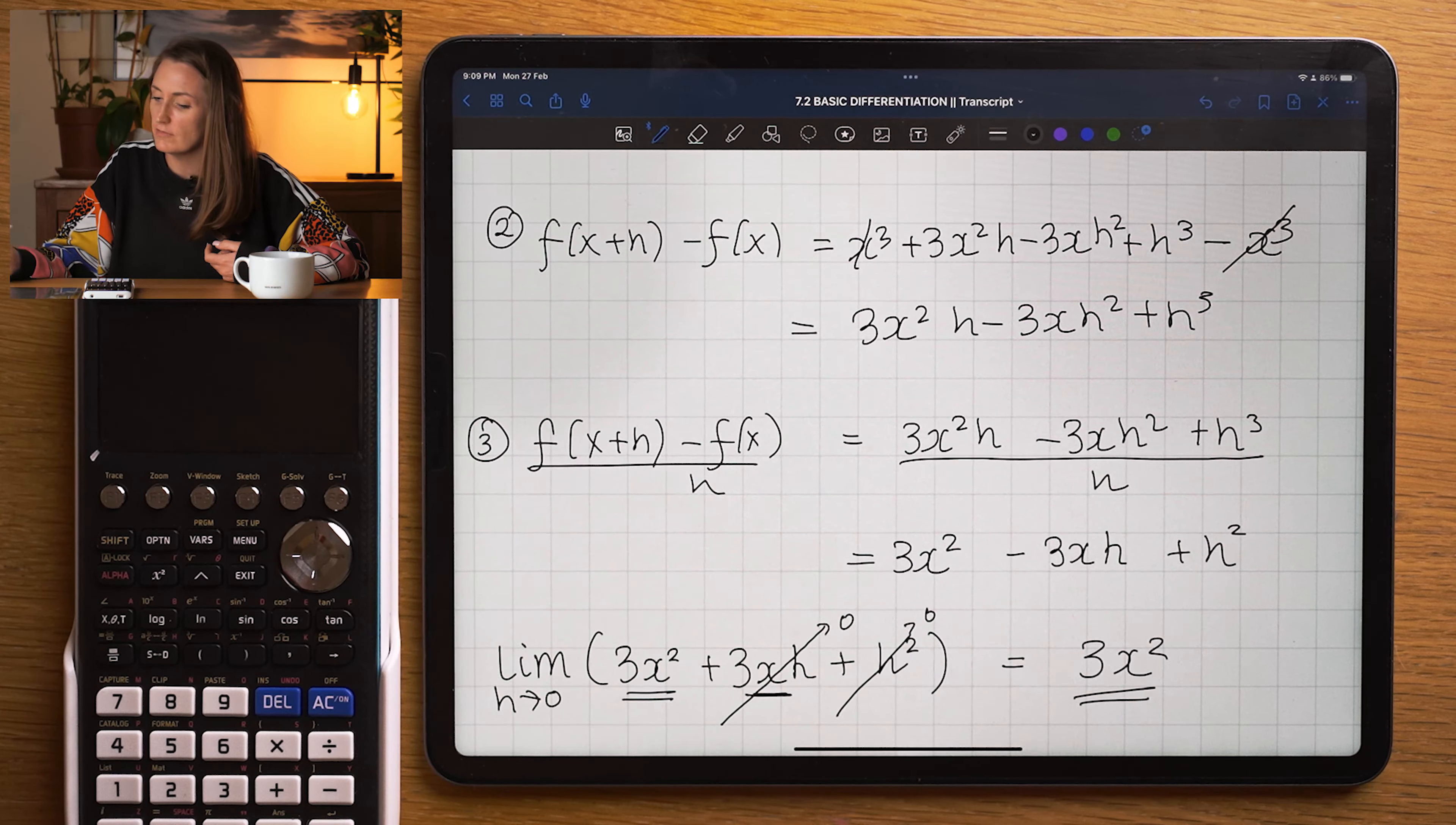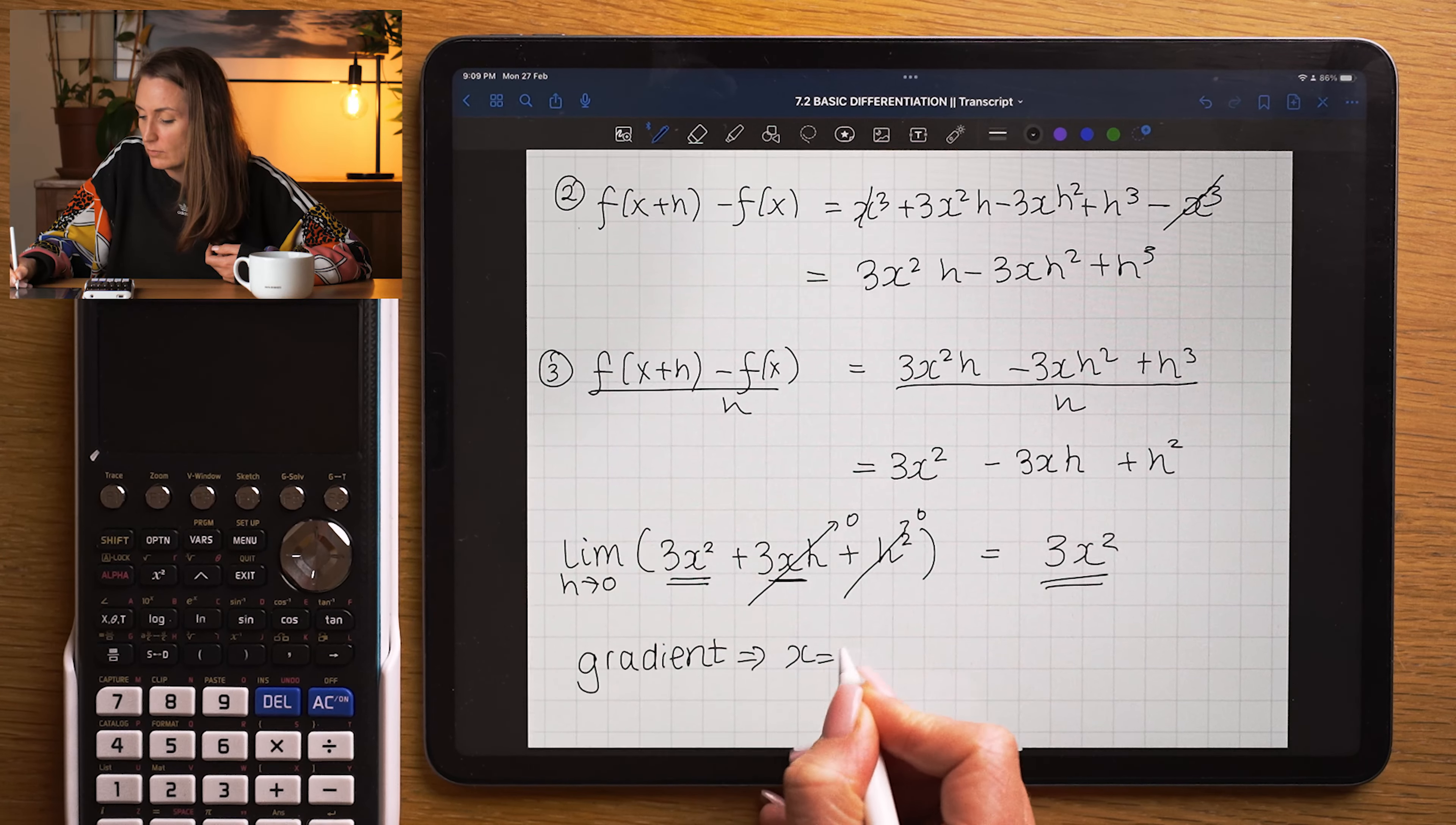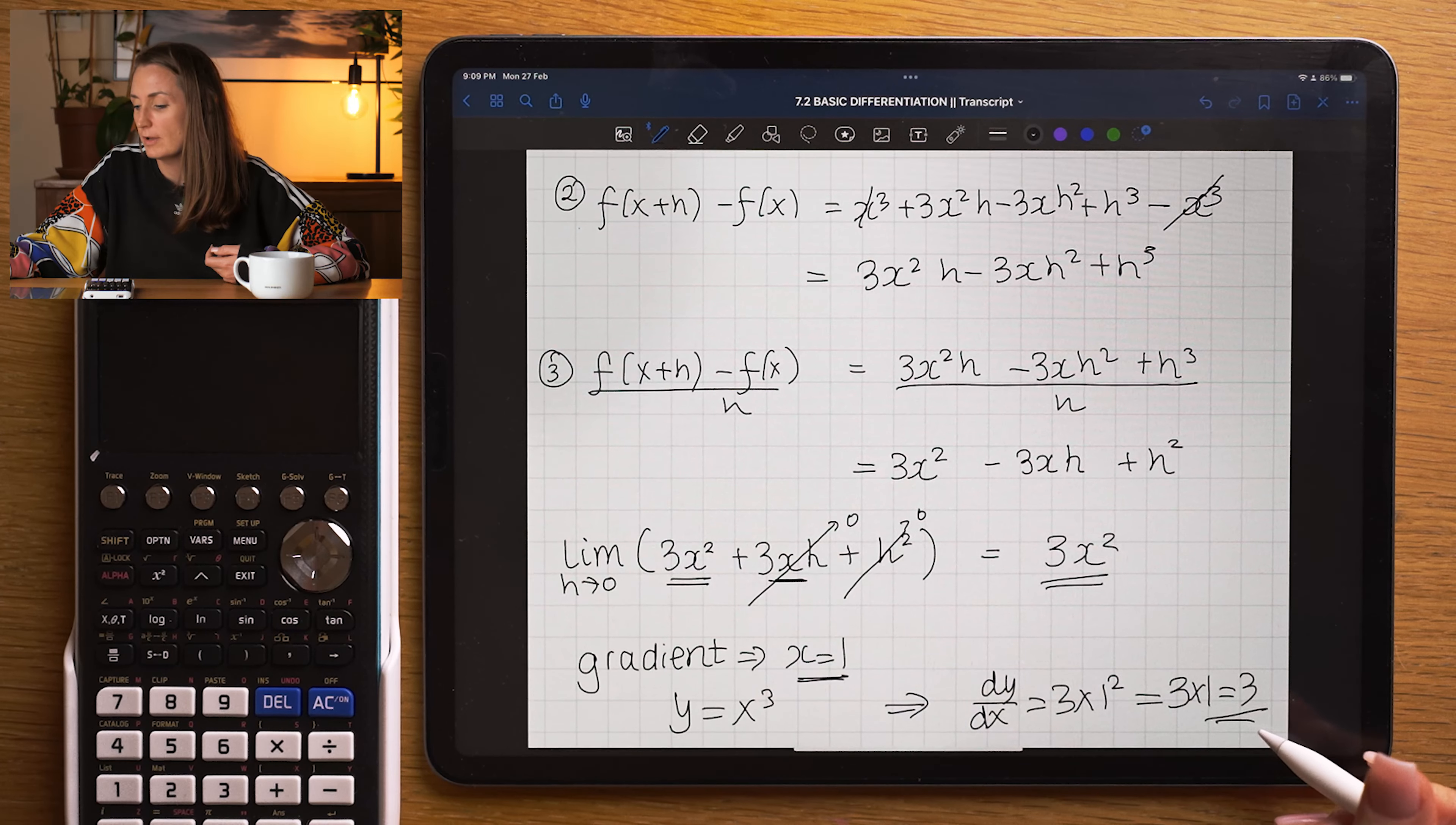So the derivative at any point, the gradient of the curve y equals x cubed is always 3x squared. So for example, if I want to know the gradient of the curve of the tangent curve when x equals to 1, if the curve is x cubed, the gradient should be dy dx equals 3 times 1 squared equals 3 times 1 equals 3. So the gradient when x is equal to 1 will be equal to 3.